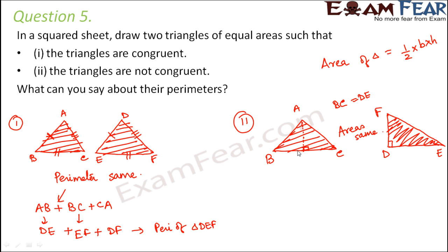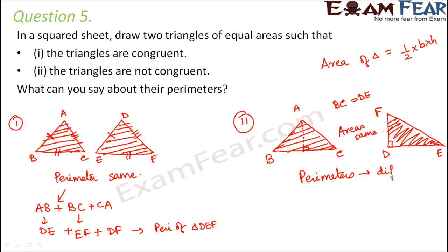Only BC is equal to DE. Other than that, the two sides are not equal and we also do not know about the angles, so therefore the two triangles are not congruent. What about the perimeter? Since the two triangles are not congruent, their corresponding sides are not equal, and therefore their perimeters will also not be the same. So the perimeters for these two triangles would be different.